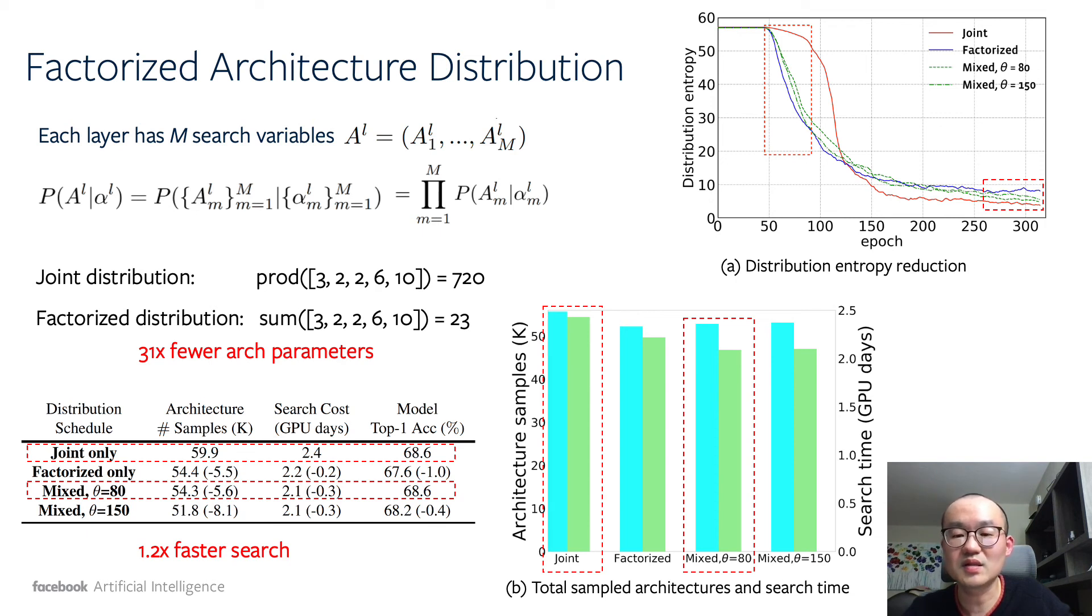Based on this, we propose a mixed schedule of architectural distribution where we use factorized distribution at the beginning of the search and convert it into joint distribution in the later stage of the search. This further speeds up the search by 1.2 times.